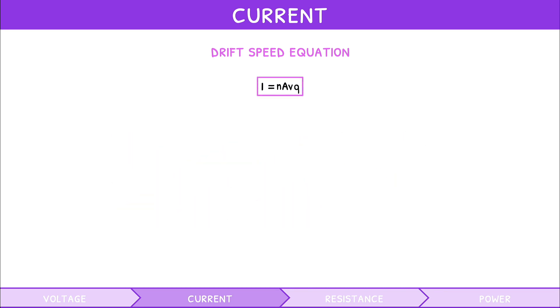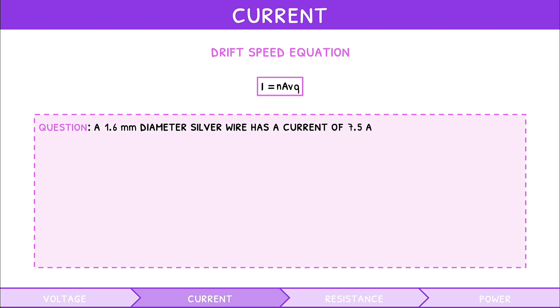Let's review this with a practice question. A 1.6 mm diameter silver wire has a current of 7.5 amps. In a single cross-section, there are 2 moles of electrons. What is the drift speed of the electrons?